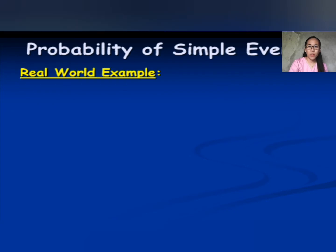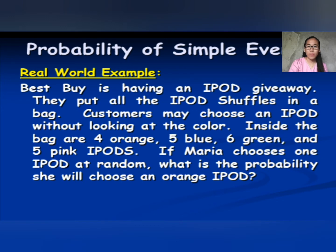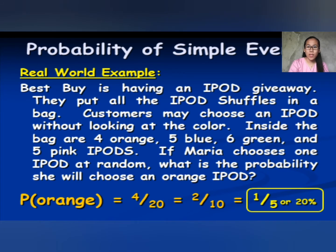Let's look at a real-world example. Best Buy is having an iPad giveaway. They put all the iPad samples in a bag so customers may choose an iPad without looking at the color. Inside the bag are 4 orange, 5 blue, 6 green, and 5 pink iPads. If Maria chooses one iPad at random, what is the probability she will choose an orange iPad? There are a total of 20 iPads in the bag. The probability of getting orange is 4 out of 20, which reduces to 1 over 5 or 20%.